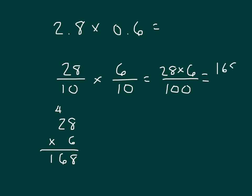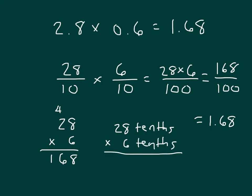We have 168 hundredths. Expressing that in standard form as a decimal, that's 1 and 68 hundredths, written as 1.68. Just as before, we could have expressed this within unit form. It would have been 28 tenths times 6 tenths, and when we multiply tenths by tenths, we do get hundredths.